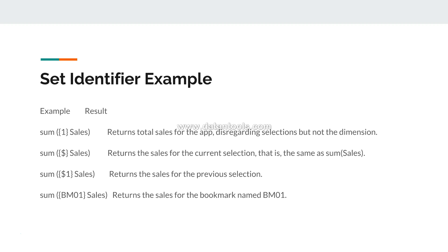Similarly, you have BM01 — the bookmark — which returns the sales for the bookmark named BM01. A bookmark stores a set of selections you have already made and saved, and you can take advantage of it to apply those saved selections in your chart. I'll show you in the next videos how to apply all of these.